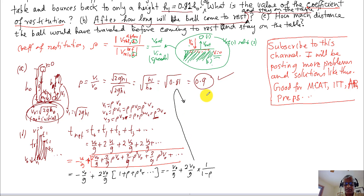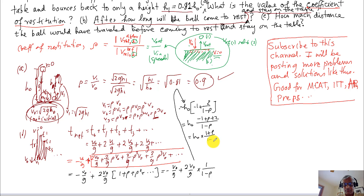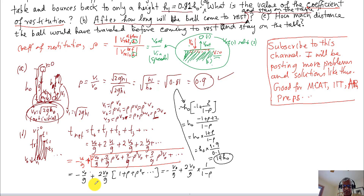Since V0/g relates to h0 (because V0 = √(2gh0)), we can write the time as proportional to √(h0/g). Simplifying: –1 + 2/(1 – ρ) = (–1 + ρ + 2)/(1 – ρ) = (1 + ρ)/(1 – ρ). So t_net = t0 · (1 + ρ)/(1 – ρ). With ρ = 0.9: (1 + 0.9)/(1 – 0.9) = 1.9/0.1 = 19. So t_net = 19·t0.